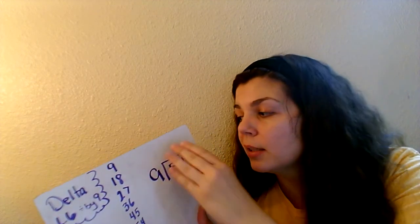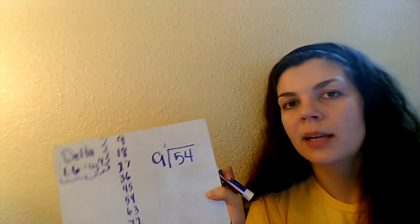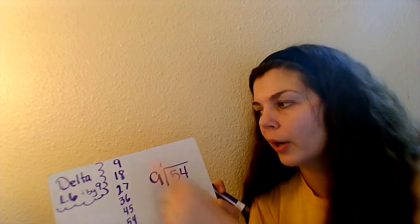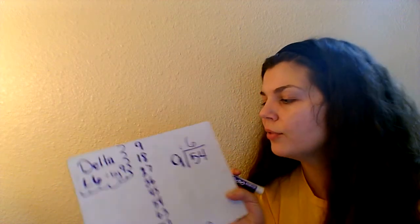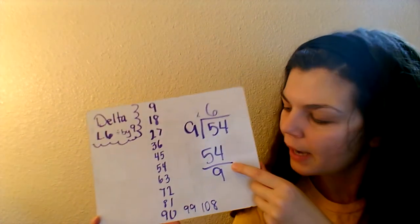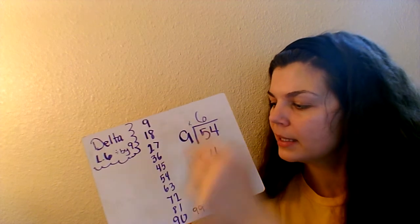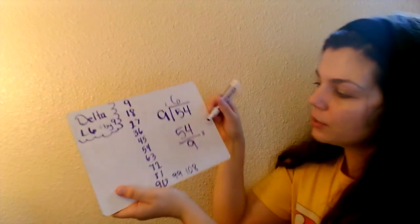Right now: nine times — remember, it's like there's an invisible times sign right here in the corner. Nine times what number? Nine times what number is fifty-four? How many nines go into fifty-four? One, two, three, four, five, six. Nine times six is fifty-four. So how many nines go into fifty-four? Six. This would be the same as this problem: fifty-four divided by nine. You might see it written like this, and you'd just write a six.